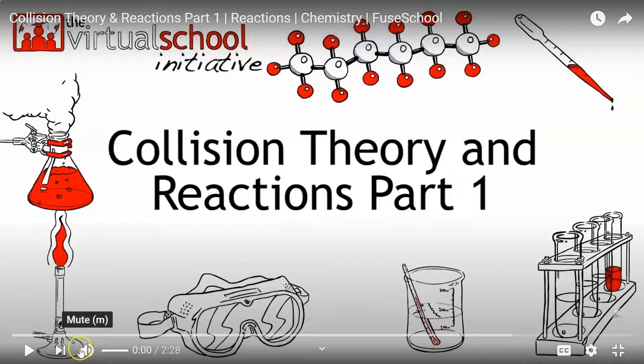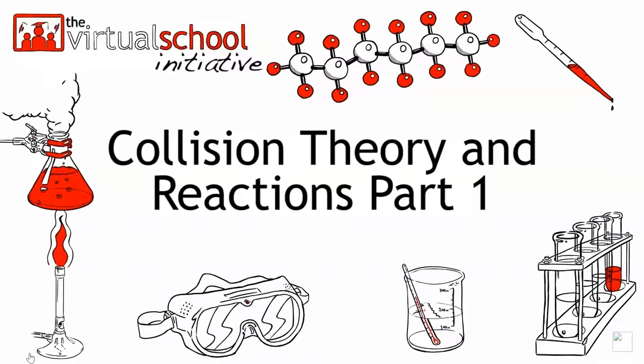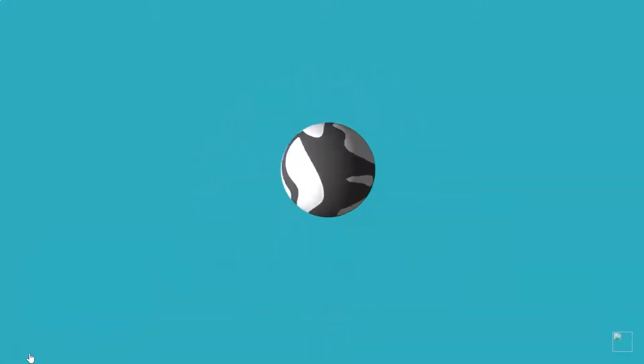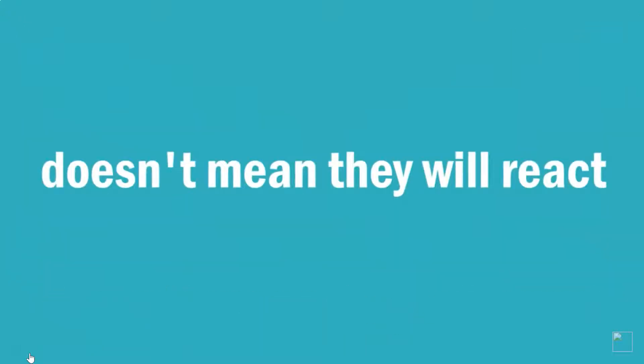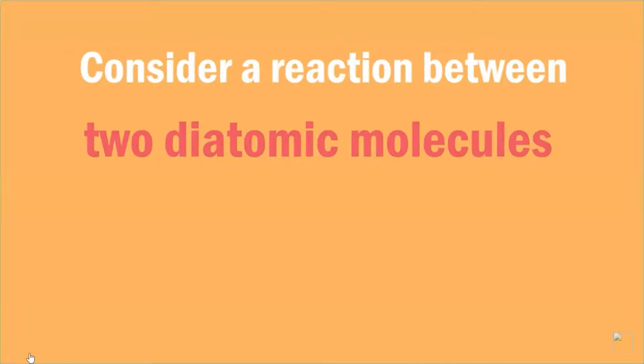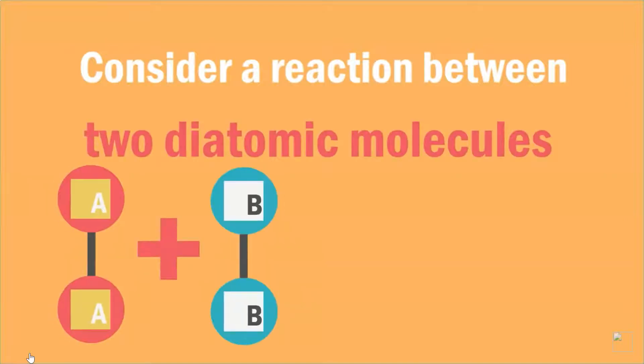I want to show you a video of the collision theory that'll help explain things. In this video you are going to learn what is necessary for a reaction to take place. For a reaction to take place, the reacting particles must collide — but just because they do collide, it doesn't mean they will react.